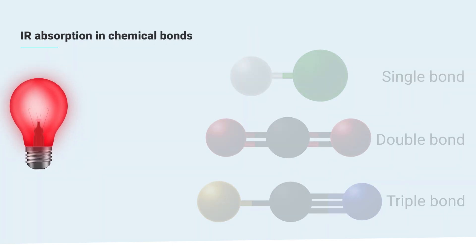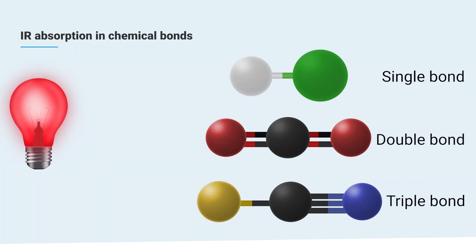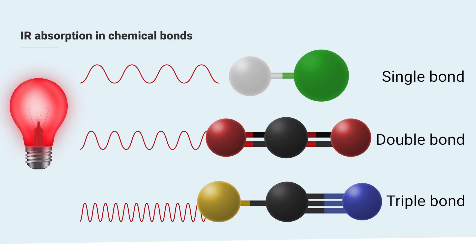Different types of chemical bonds require different amounts of energy to vibrate. Consequently, each type of bond can absorb specific wavelengths of infrared radiation.